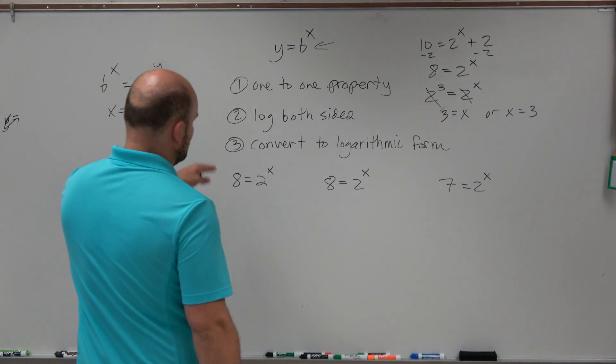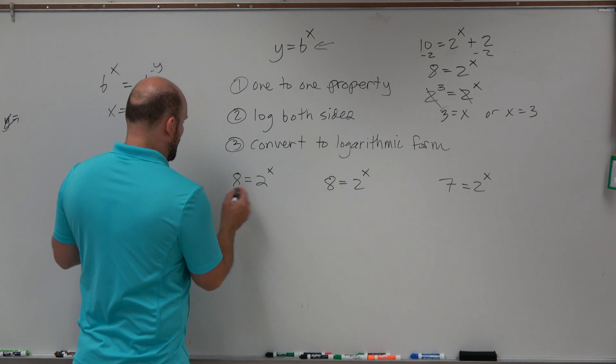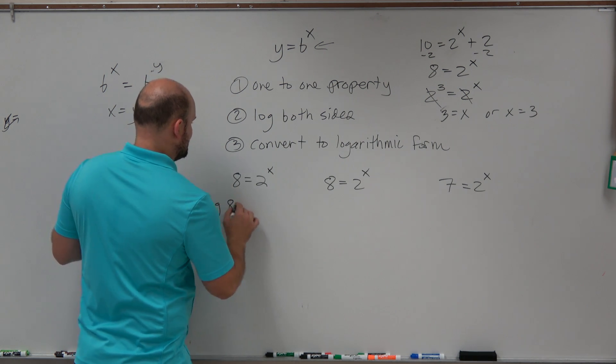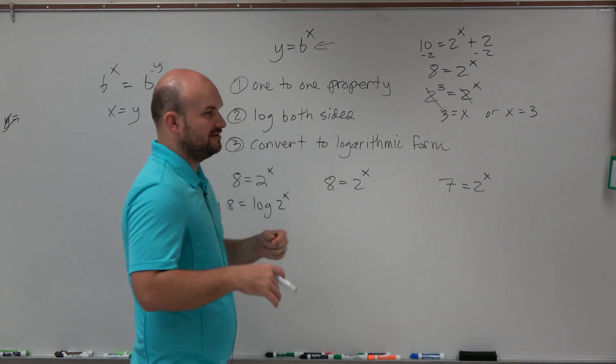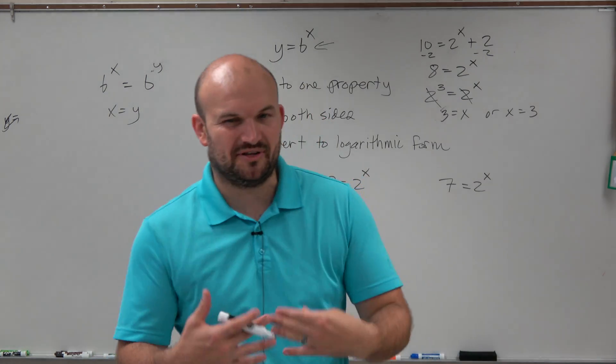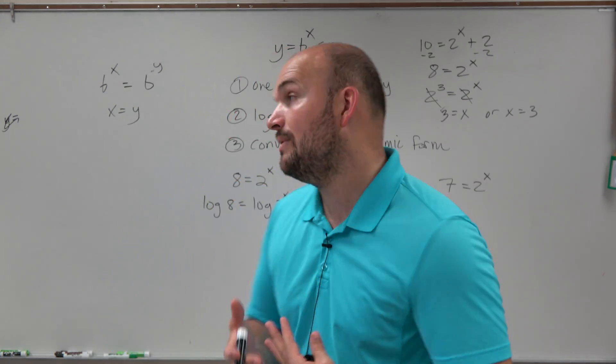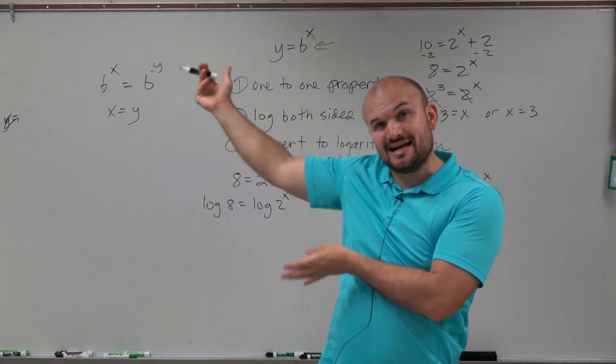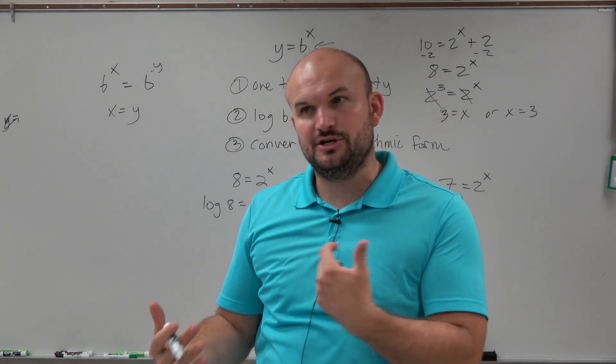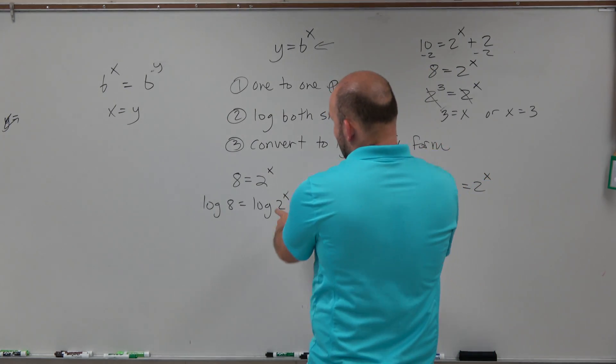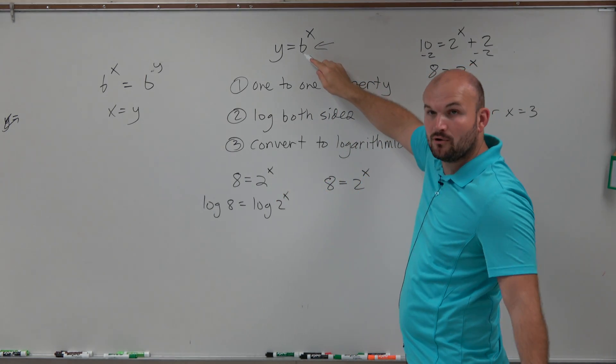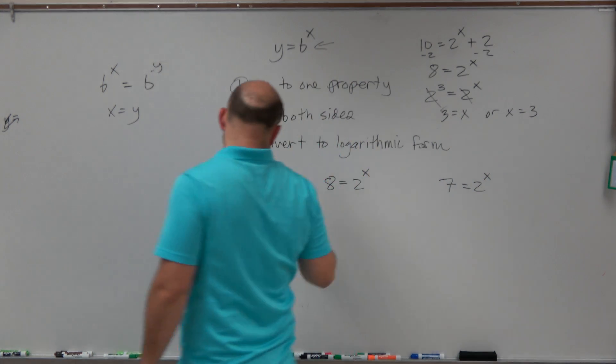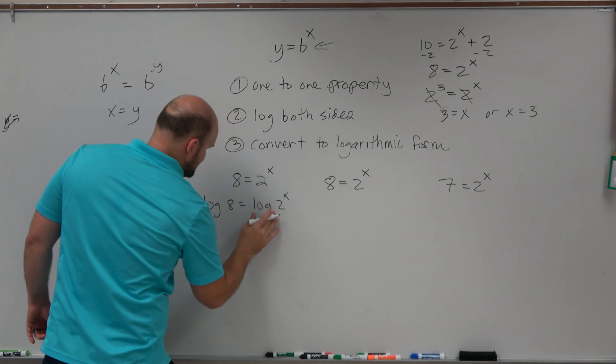Now, I'm going to do this for the exact same problem, 8 equals 2 to the x. I'm going to do this both ways so you can see how the answer would be. And then I'm going to do a problem where we would have to use these calculator forms. So when you're using taking the log of both sides, basically you're going to say log of 8 equals log of 2 to the x. But adding the log is not really the purpose that we want to do. What we want to do is get rid of this variable as our exponent. So what we're going to do is we're going to take the log of the same base as our power b. So therefore, what we're going to do is we're going to take log base 2.